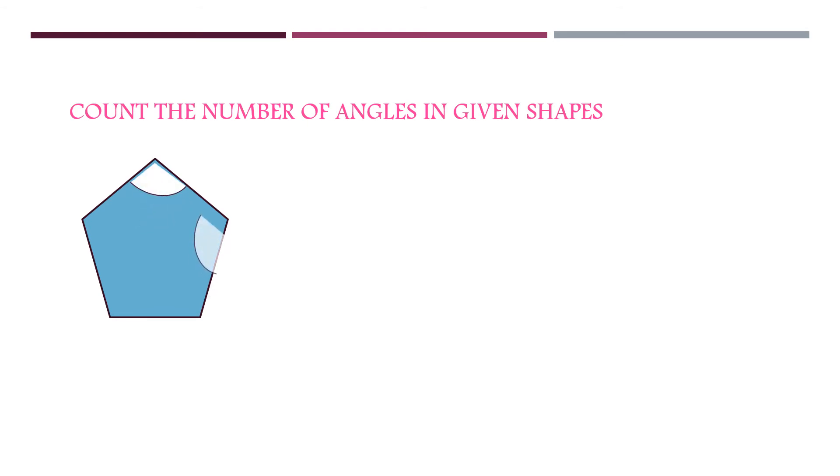Some shapes are given here. You have to count the number of angles in these shapes. Look at the first shape. The shape is known as pentagon. Here how many angles are there? 1, 2, 3, 4, 5. So the number of angles in pentagon is 5.